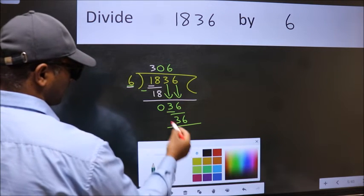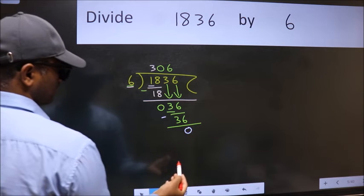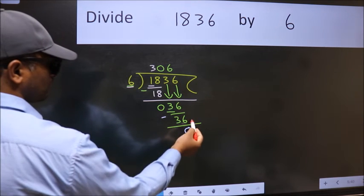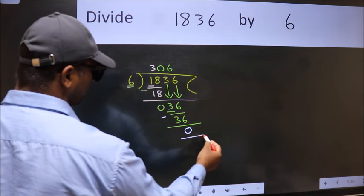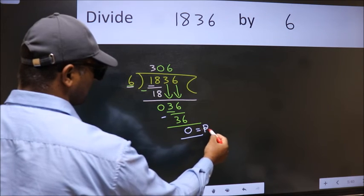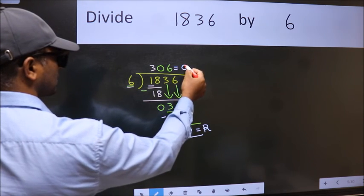Now we subtract. We get 0. No more numbers to bring it down, so we stop here. This is our remainder and this is our quotient.